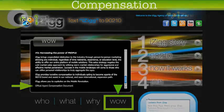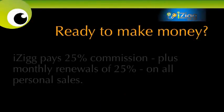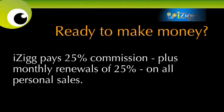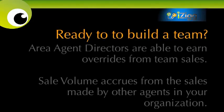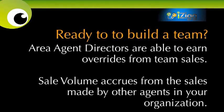We will review for you now the iZIG Compensation Plan. You ready to make money? iZIG pays 25% commission plus monthly renewals of 25% on all personal sales. But maybe you're ready to build a team. Area agent directors are able to earn overrides from team sales as well. The sales volume accrues from the sales made by other agents within your organization.